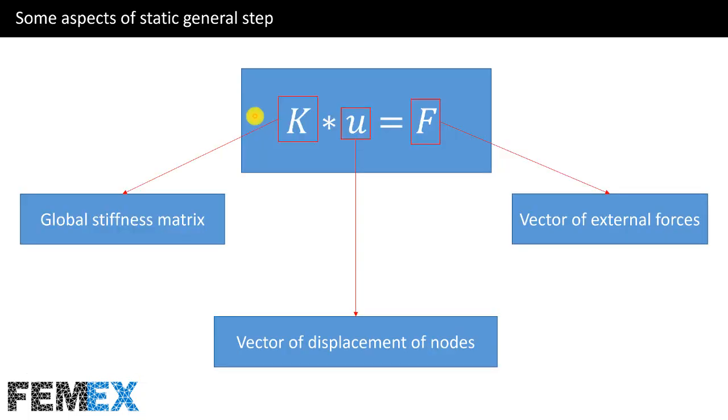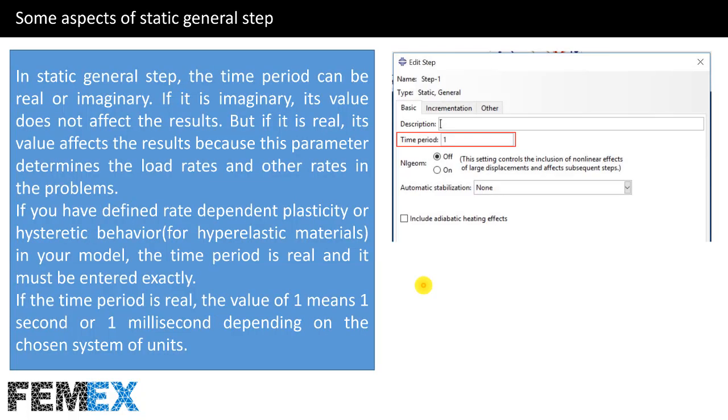A Static General Step solves this main equation. K is the global stiffness matrix, U is the vector of displacement of nodes, and F is the vector of external forces. Now, I want to talk about some main settings of Static General Step. Here, I want to talk about the time period.